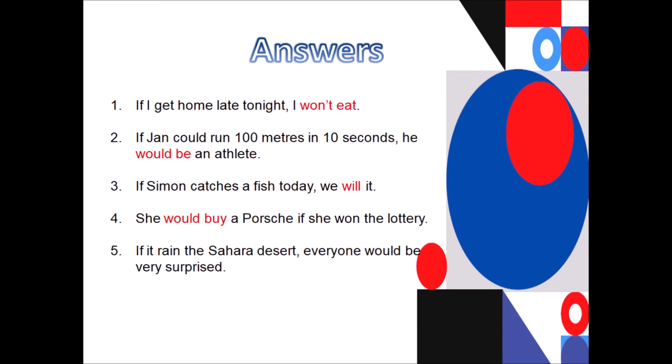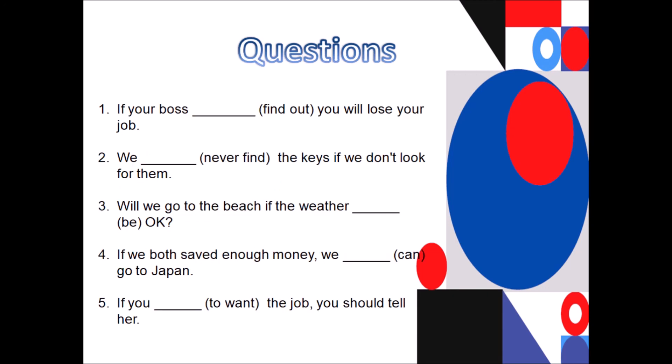So if I get home late at night, I won't eat. If Jan could run 100 meters in 10 seconds, he would be an athlete. If Simon catches a fish today, he will eat it. She would buy a Porsche if she won the lottery. If it rained in the Sahara desert, everyone would be very surprised. So let's go to the final one.